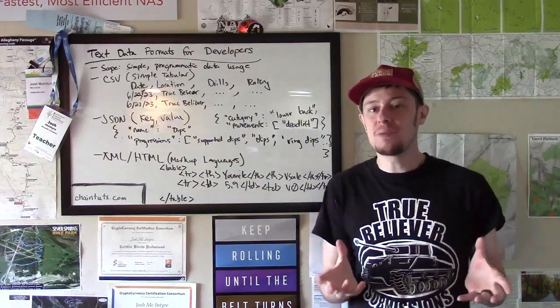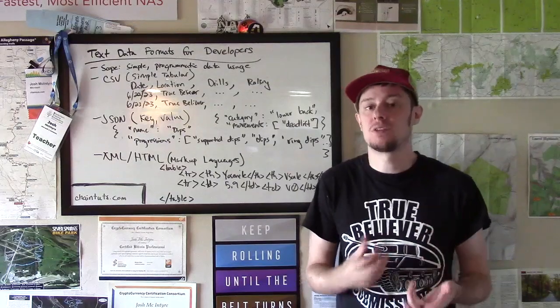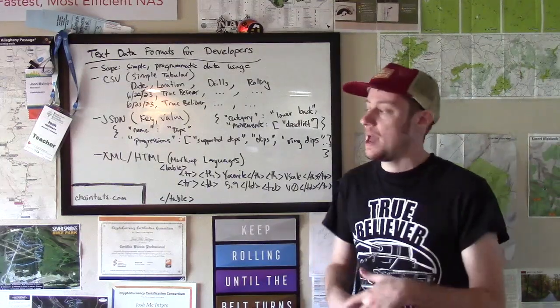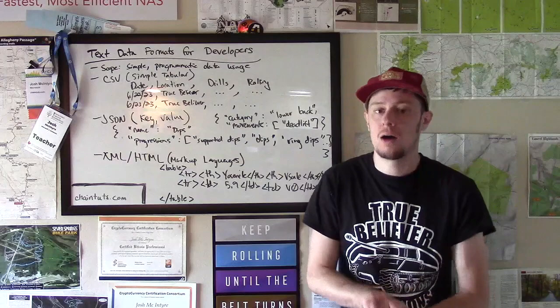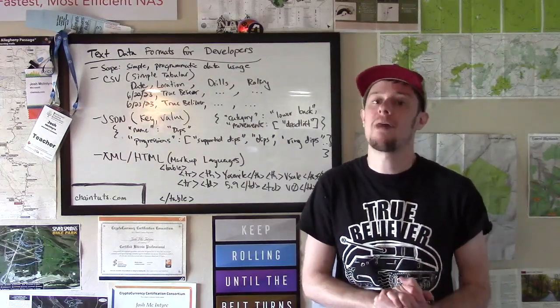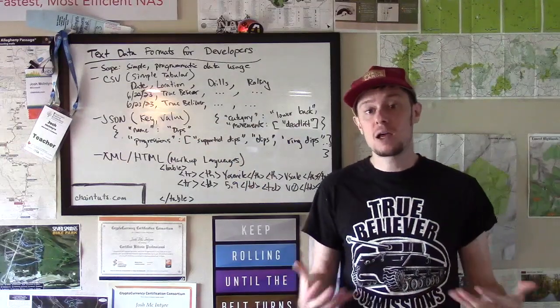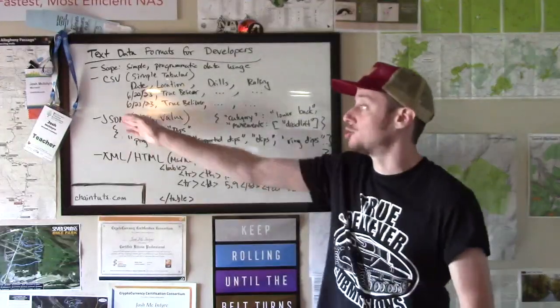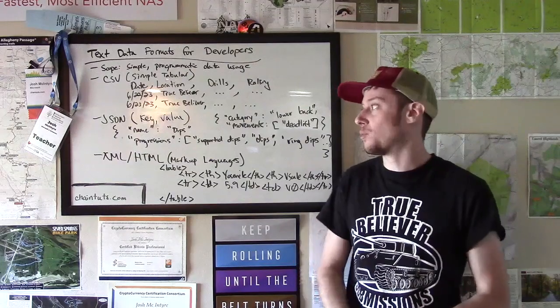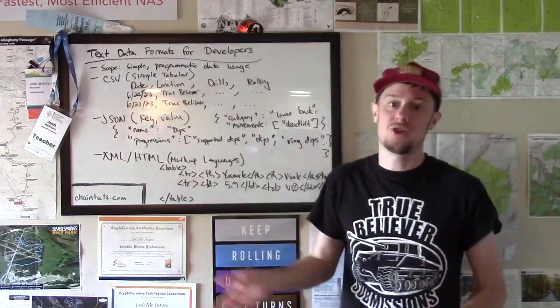But sometimes we want to store information that's a little bit more complex. And so a next common type of text storage format that coders use is a key value store. And a very common format for this is JSON which stands for JavaScript Object Notation.